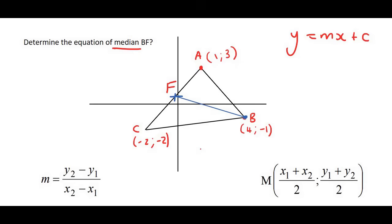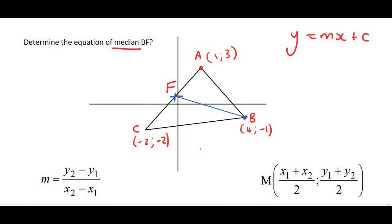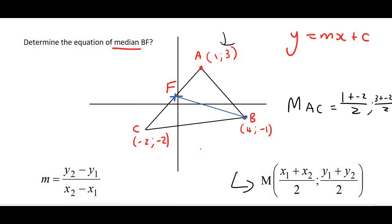So what we need to do is work out the midpoint of AC first. We will use the midpoint formula: (1 + (−2)) / 2 for the x values and (3 + (−2)) / 2 for the y values. That's going to give us negative 1/2 for x and 1/2 for y. So those will be the coordinates of F.